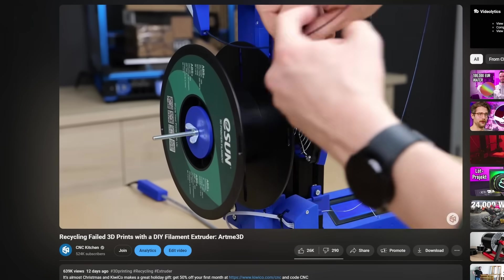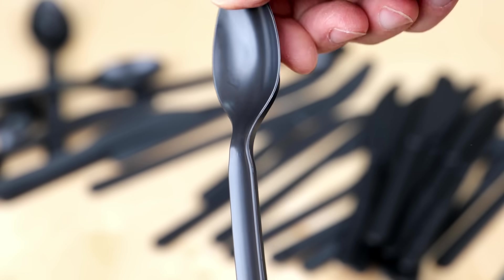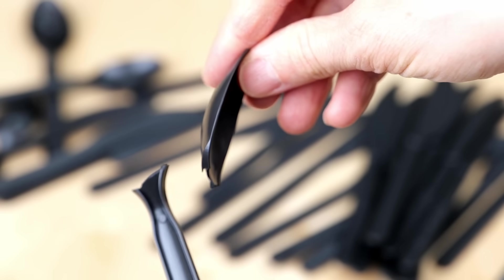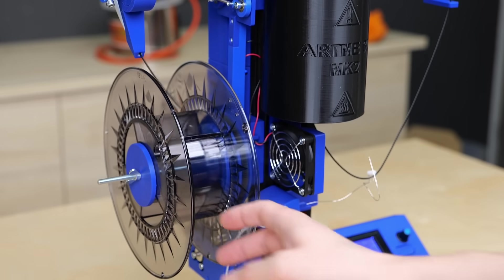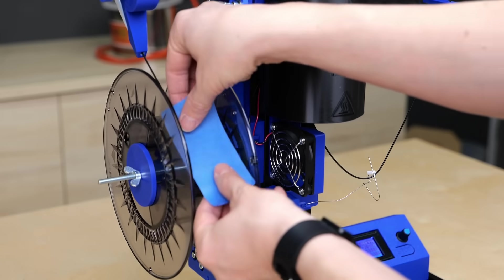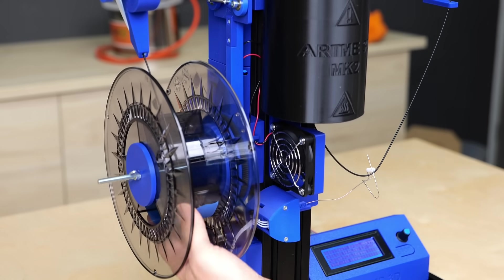Usually you simply feed the end of the filament through a small hole on the side of the spool and bend it over to fix it in place. Yet similar to the utensils we started with, also the filament was really brittle and just snapped off when I tried to bend it over. So instead of bending it, I simply used a bit of tape to fix it to the spool, which allowed me to start the winding process.